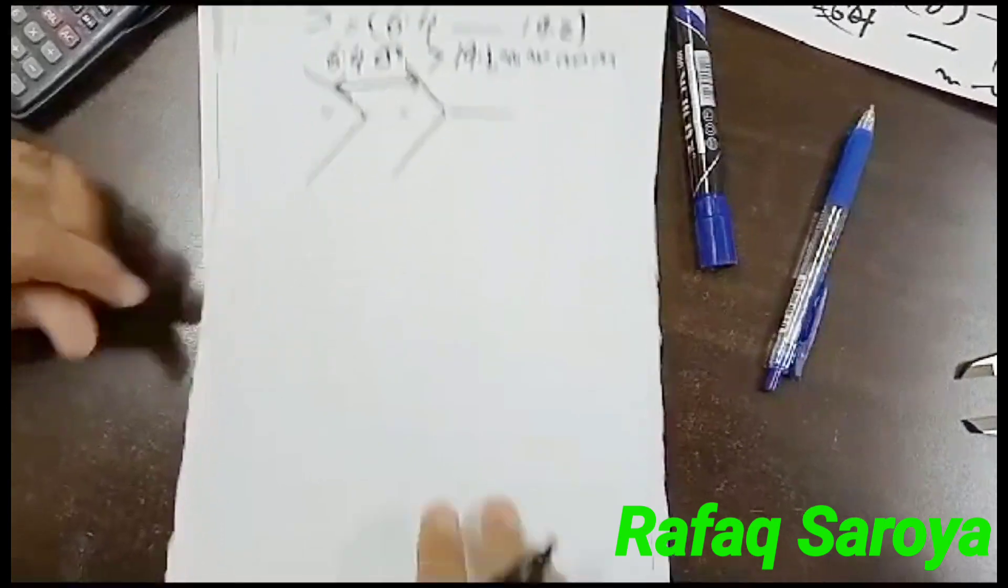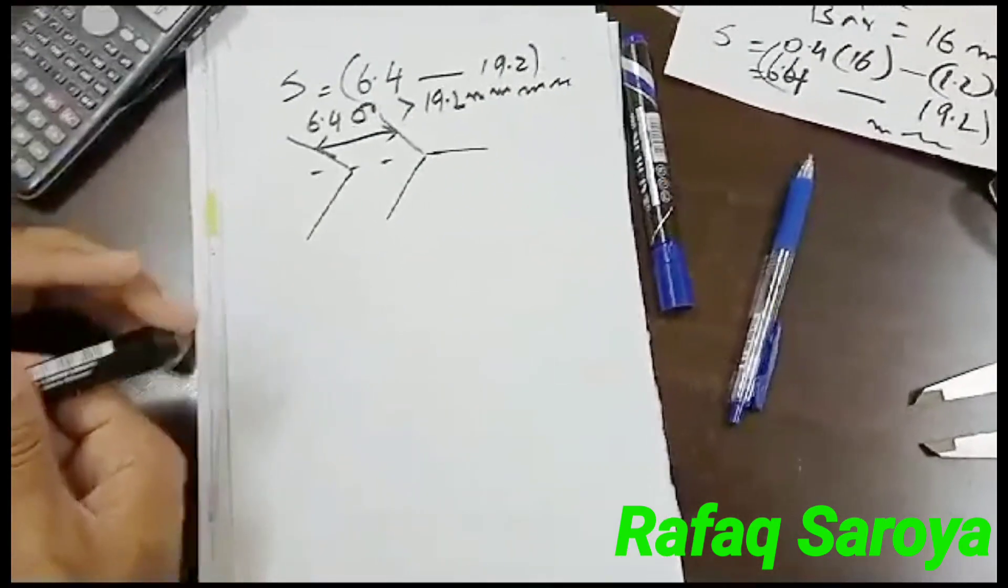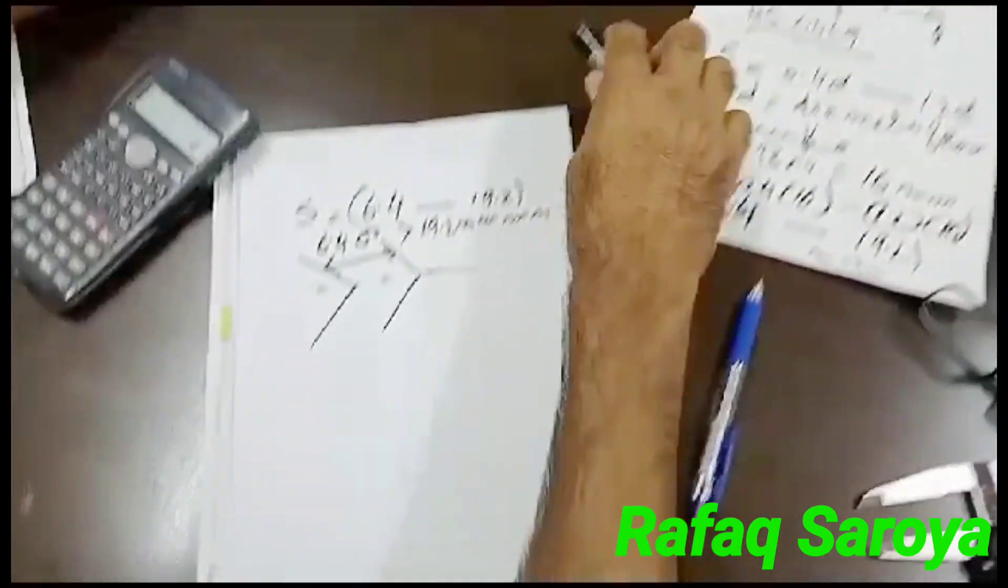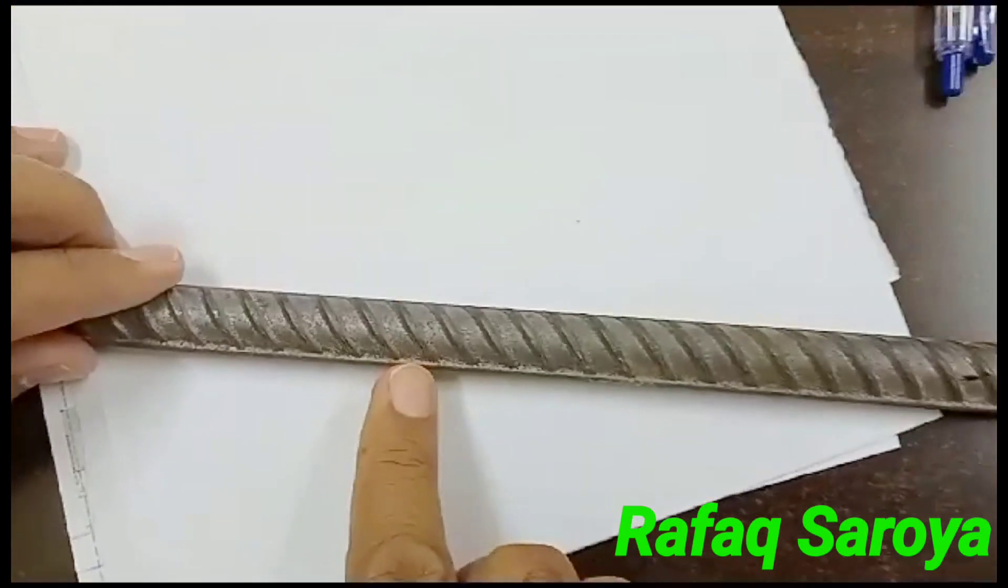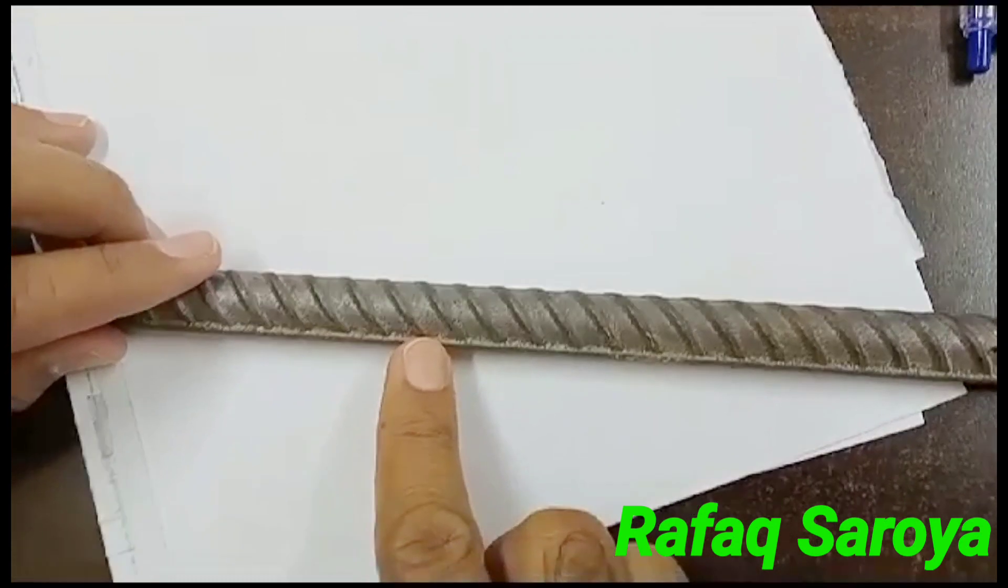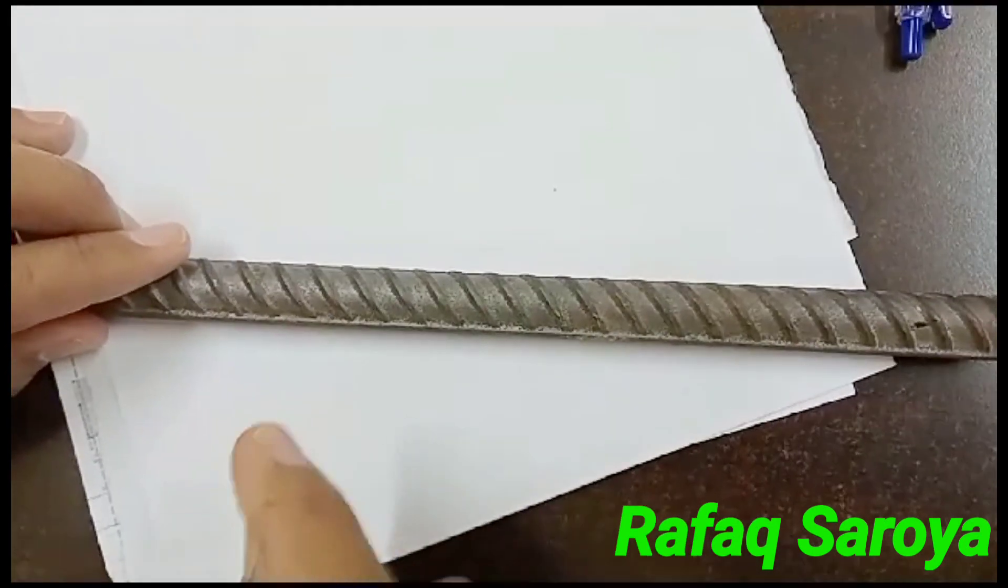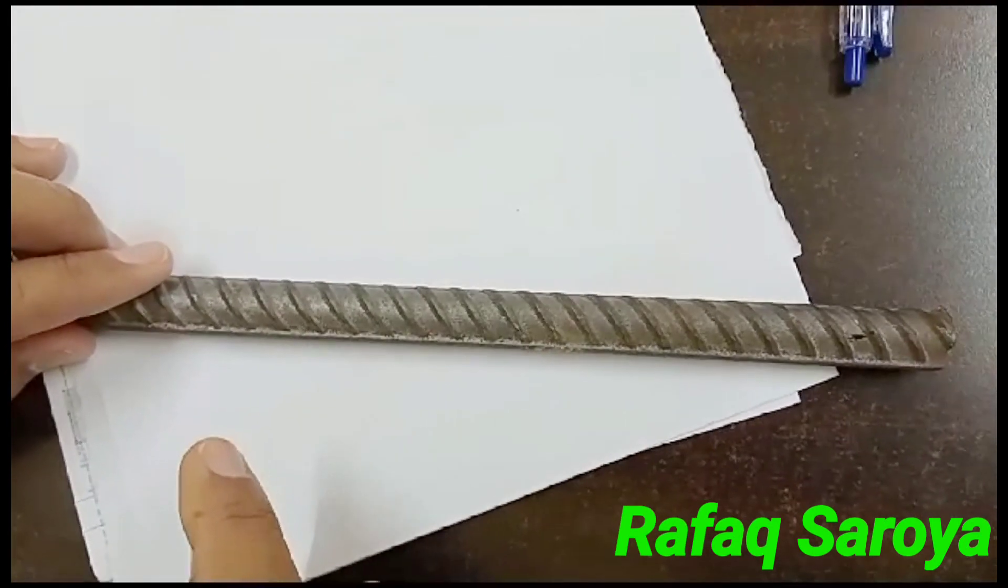Now, for your understanding, as I have this one bar with me, and this bar is 16 dia, it will vary. Now, just for your understanding, I will show you what is the spacing between two ribs.